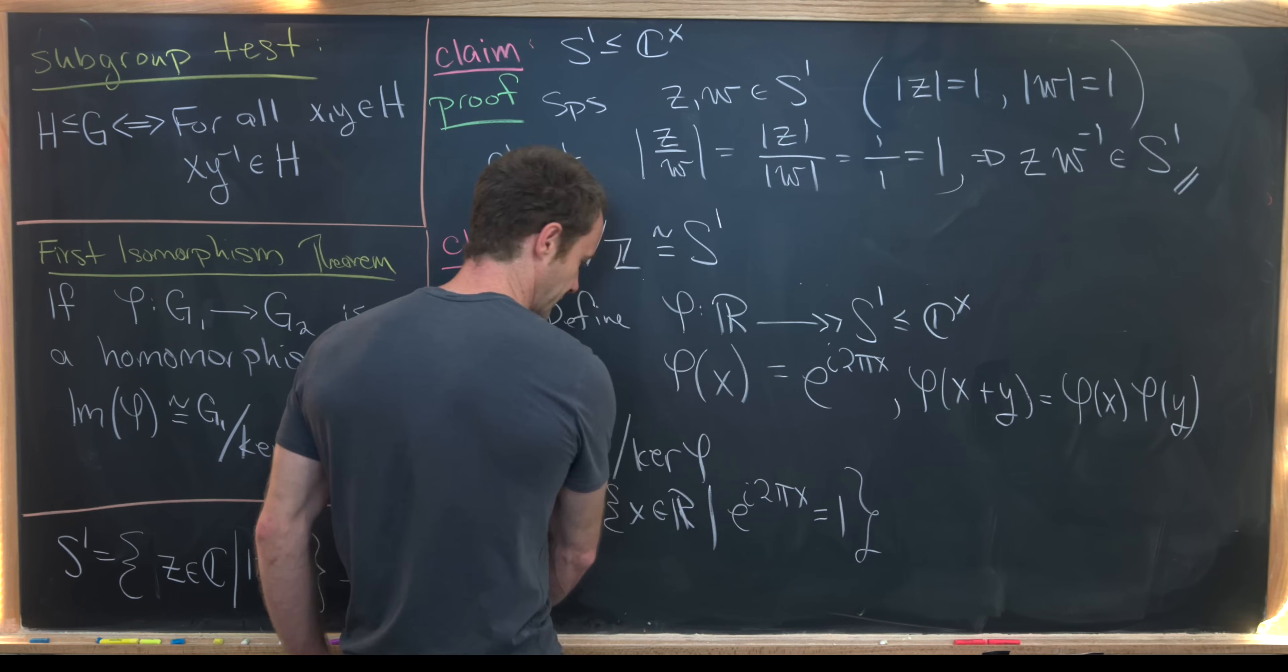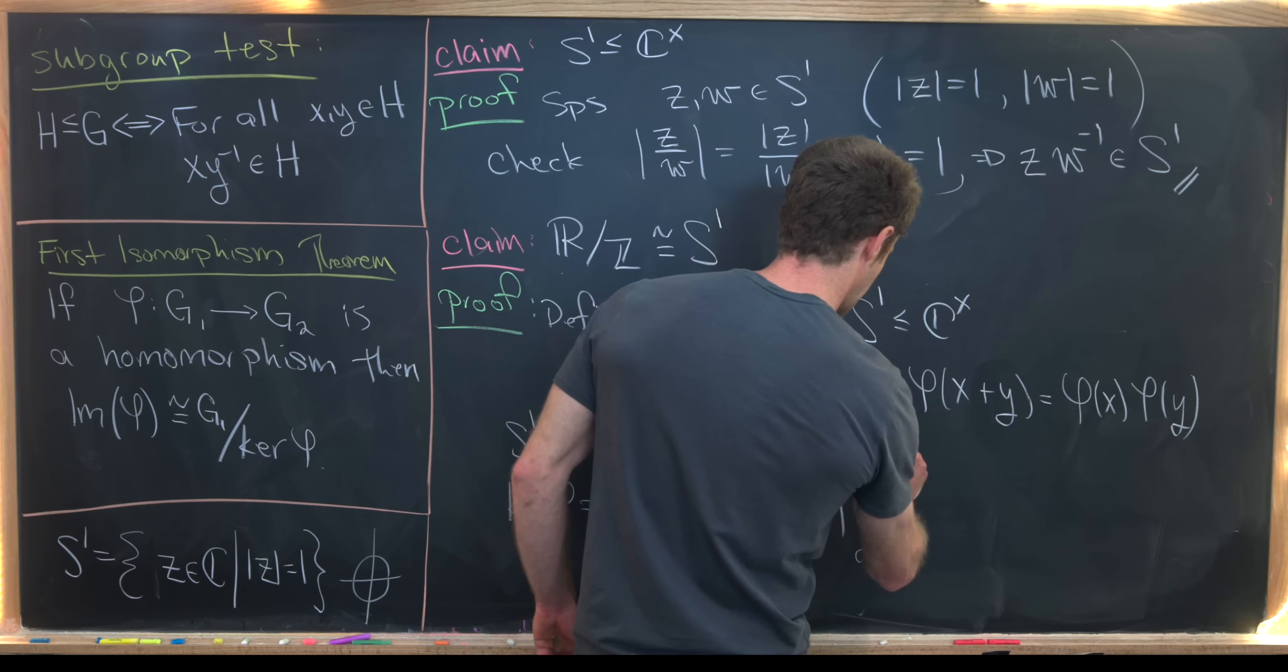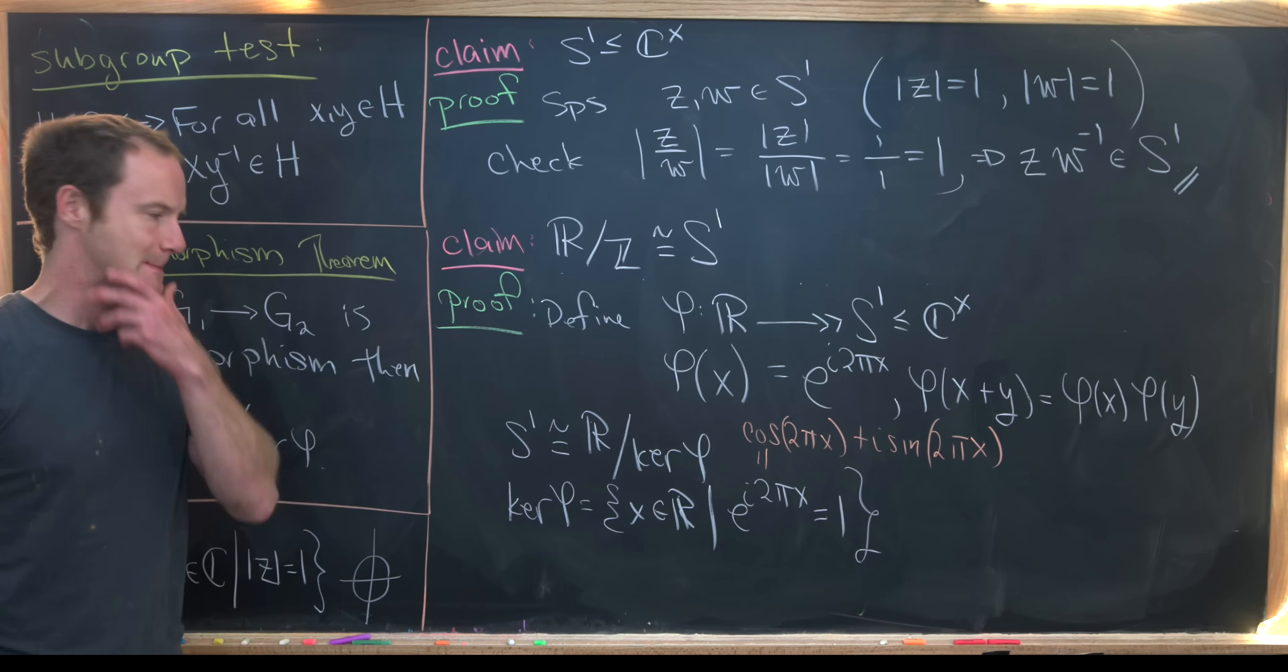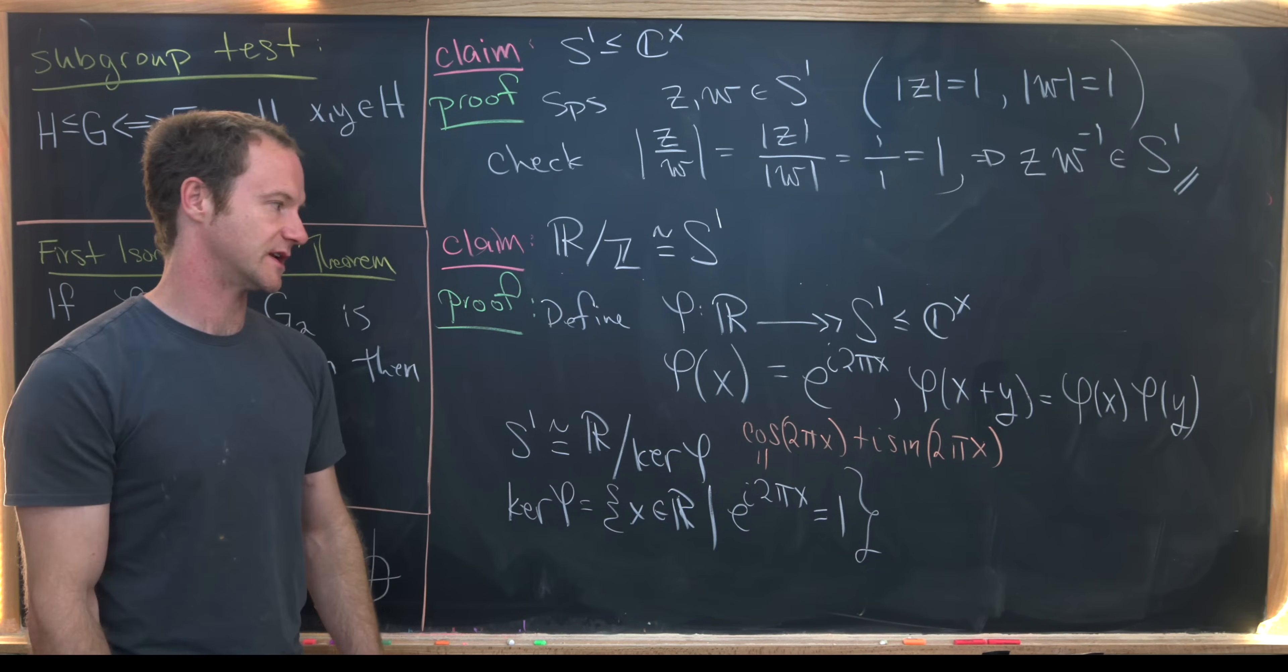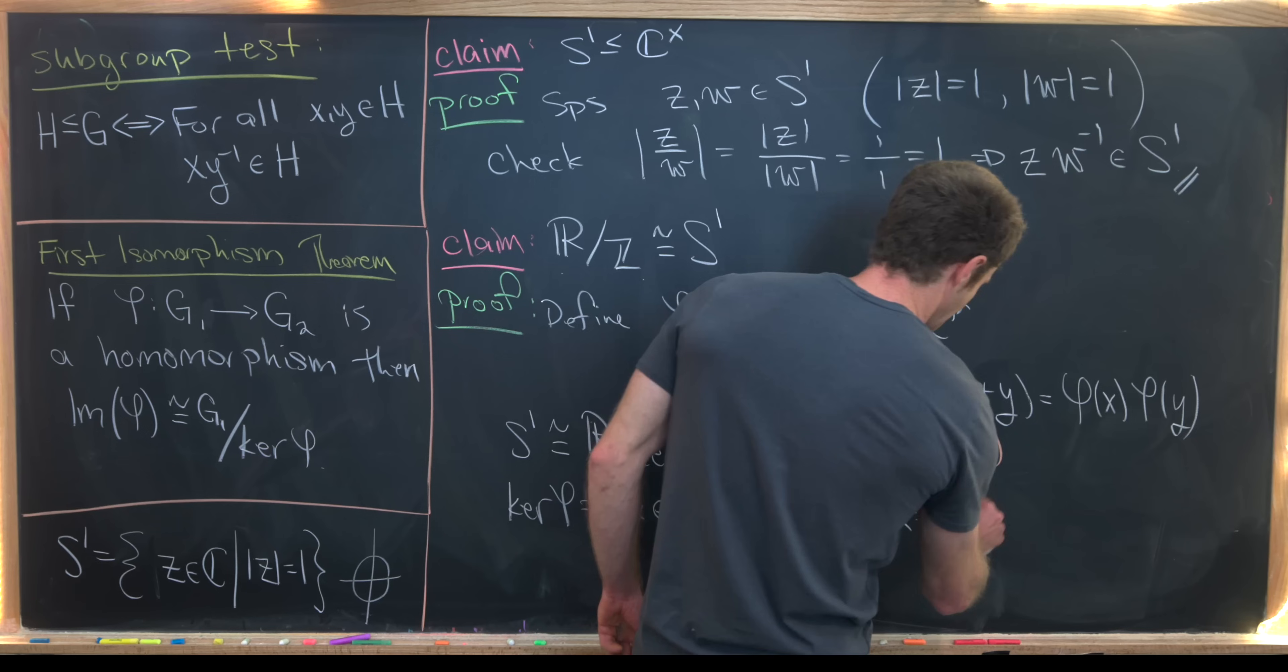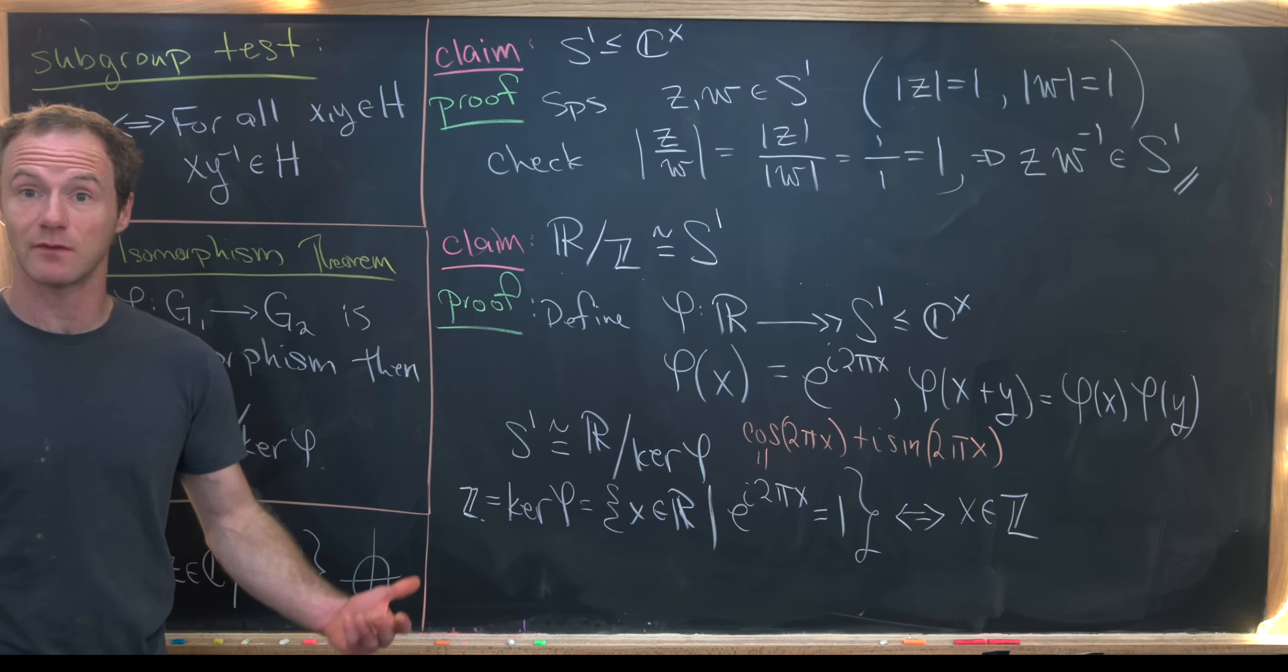But let's recall by Euler's formula, we know that e to the i 2 pi x is in fact cosine of 2 pi x plus i times sine of 2 pi times x. Well that means that cosine of 2 pi x equals 1, just comparing the real parts of both sides of this equation, and the imaginary part is 0. In other words, sine is 0. But that's the same thing as saying that x is in the integers. But that means our kernel is equal to just the subgroup of integers.